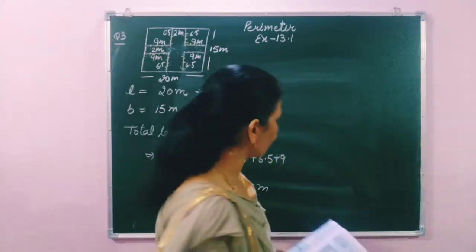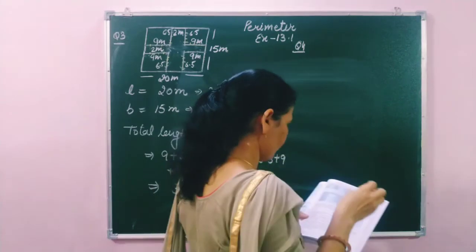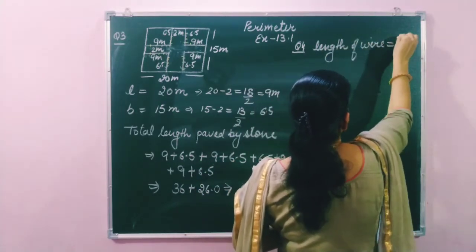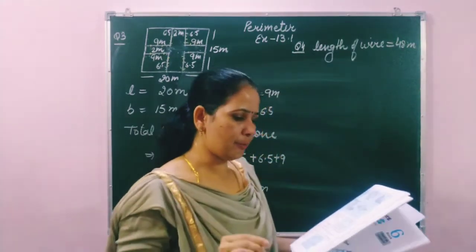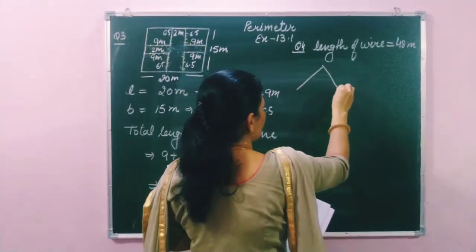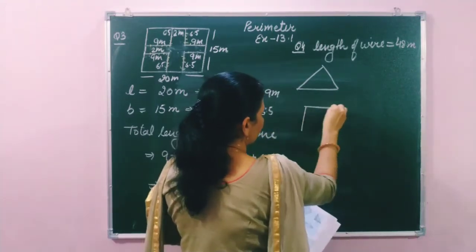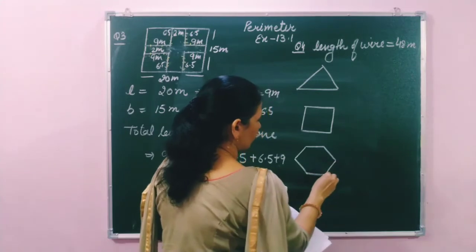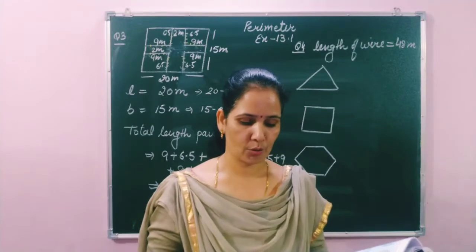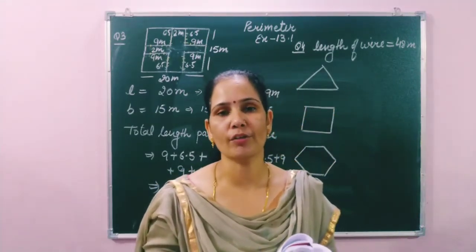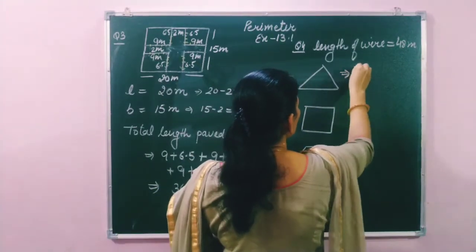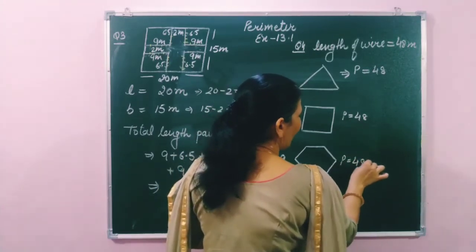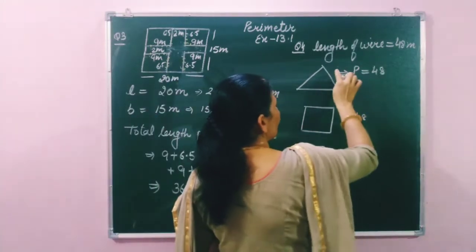Now moving to question number 4. They have given a total length of wire of 48 meter. Using the same wire, a person molded it into three different shapes: first an equilateral triangle, second a square, and third a regular hexagon. Since the same wire is used each time, the perimeter is 48 meter in all three cases.